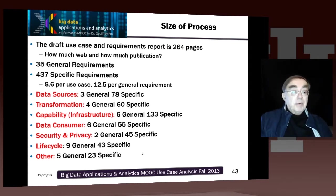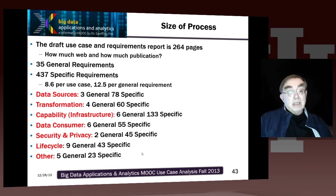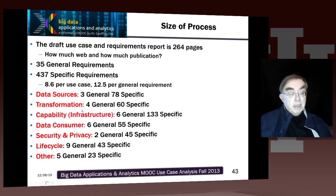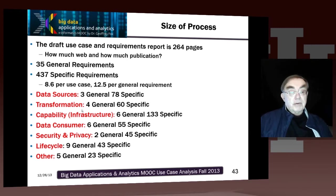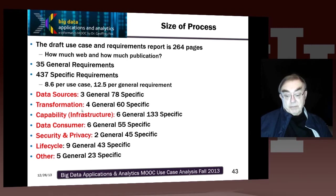I explained how we put them in these categories and how different fields of the use case template naturally mapped into these different categories. But it was all done by a person, not automated, so the person can make a decision to violate the general rule. If you're going to do this at any greater volume than 51, you'll need to find some automatic way of doing this.